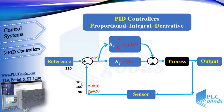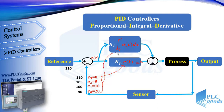Similarly, this process will continue until the liquid level reaches the reference value. Here we can see the important difference between the proportional and integral terms: when the error is zero, the output of the proportional term is zero. But the integral term uses past error values, so its output can be nonzero.